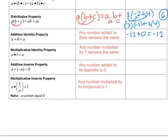The multiplicative identity property states that if you take any number and multiply it by one, the number is going to remain what it was before. So if we take 6 and multiply by 1, we still have 6.